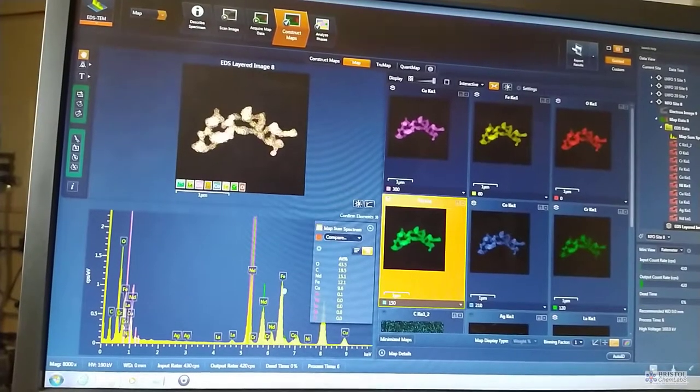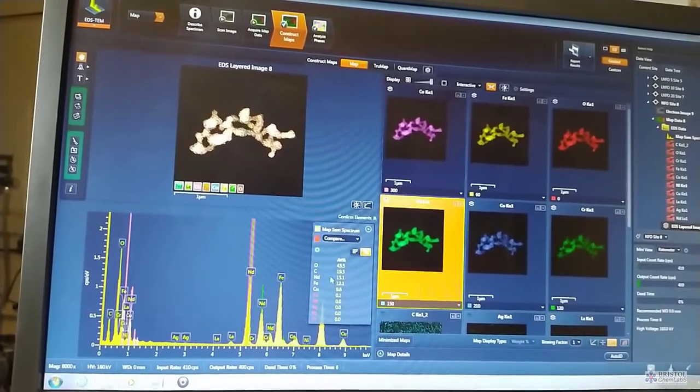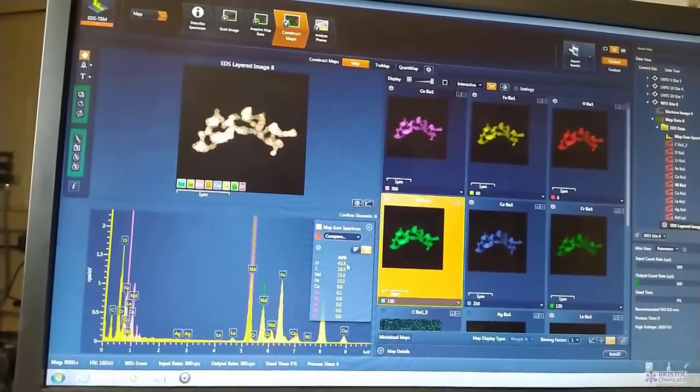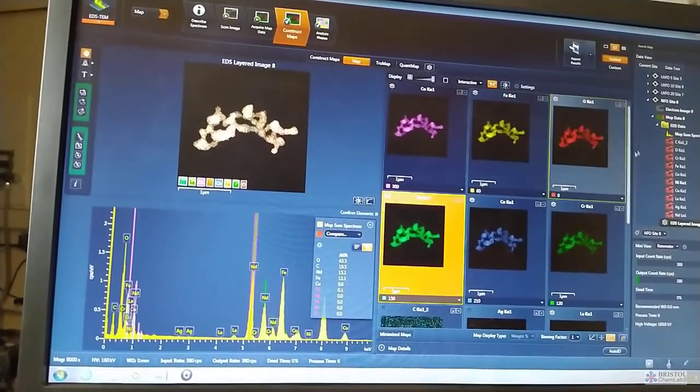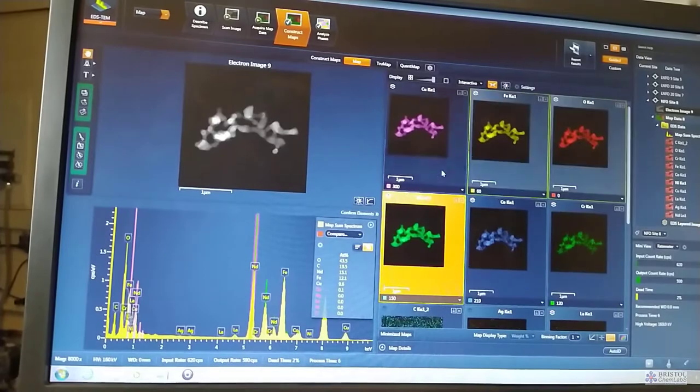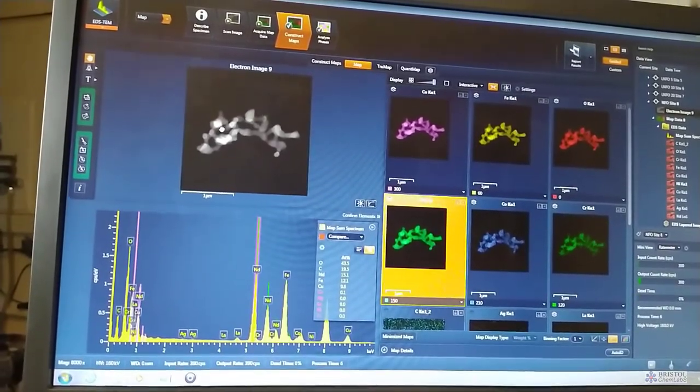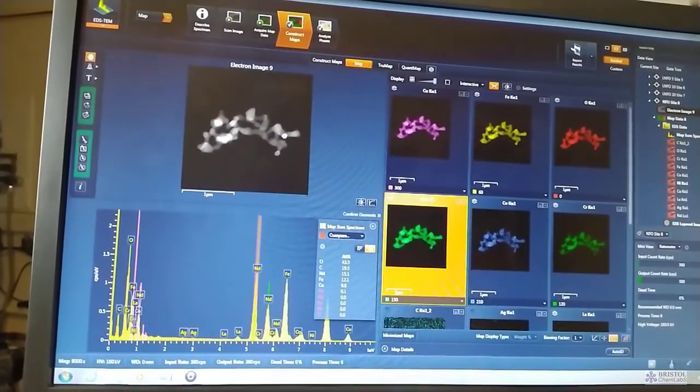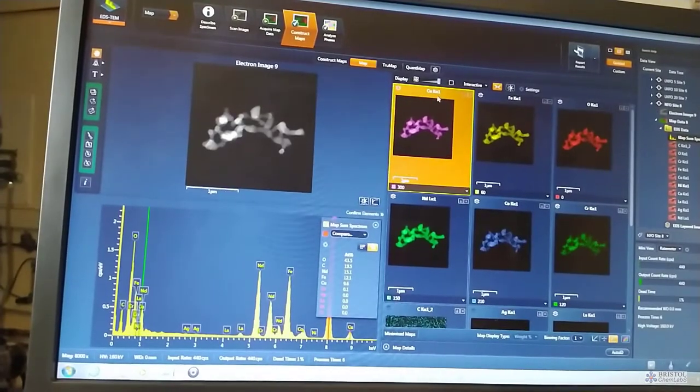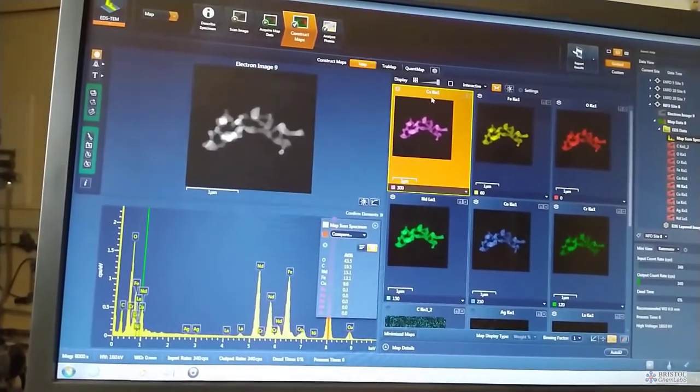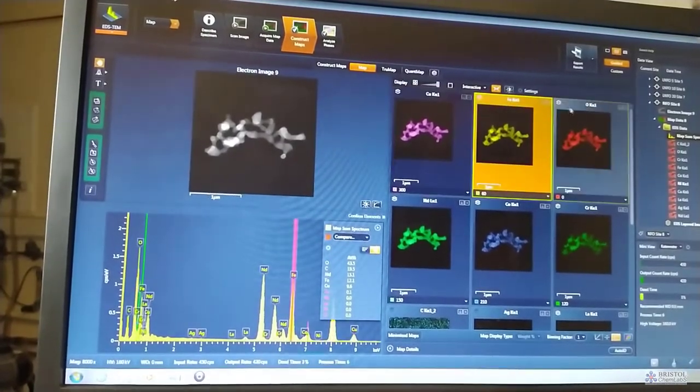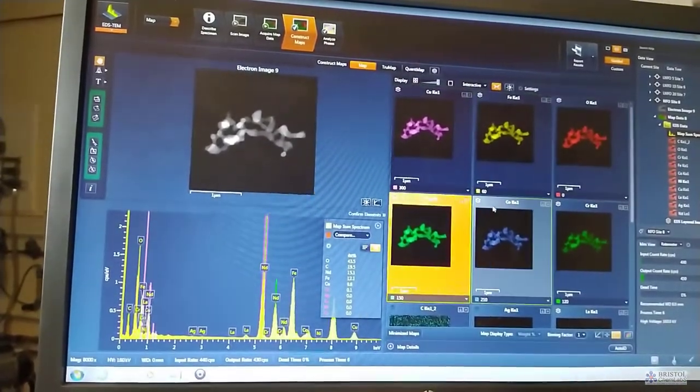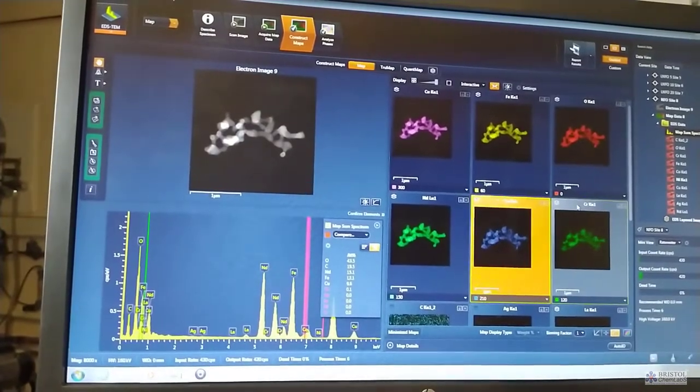So the spectrum showing the different elements present within the material, the relative atomic weight percent of the material. This is the transmission electron micrograph image, and then we can see the distribution of individual elements mapped across the sample: copper, iron, oxygen, neodymium, cobalt, chromium.